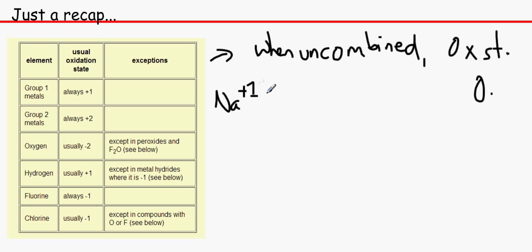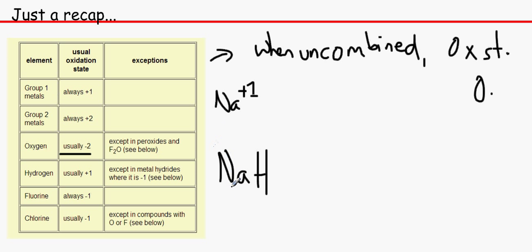Because Na has lost an electron, it has been oxidized. For oxygen, it's usually −2 except for peroxides and F2O. For hydrogen, it will usually be +1 except in metal hydrides. So for example with NaH — we know group 1 metals are always +1, and since the overall oxidation number is 0, this hydrogen needs to be −1 to make the oxidation state 0.